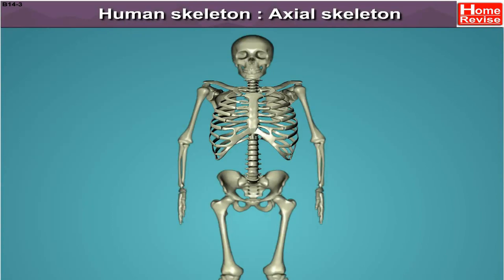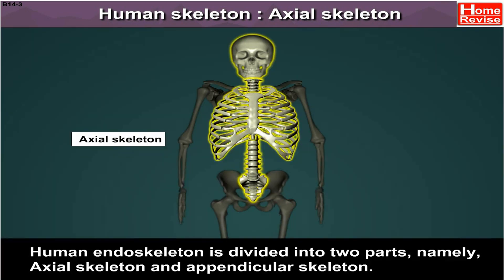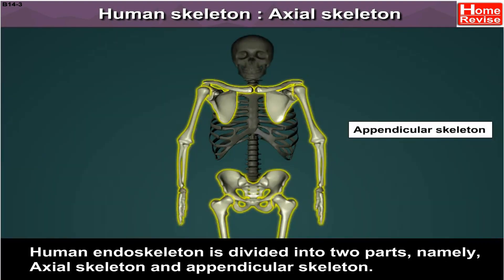Human endoskeleton is divided into two parts, namely axial skeleton and appendicular skeleton.